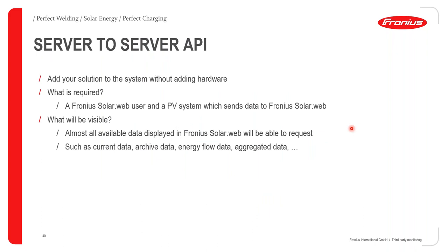What is required to get this data? You just need to add an API without any hardware additions — simply an active SolarWeb user account and a PV system sending data to Fronius SolarWeb. You'll be able to see all data available in SolarWeb: current data, archived data, energy flows, and aggregated data — essentially accessing SolarWeb as though you're actually on the monitoring platform itself.